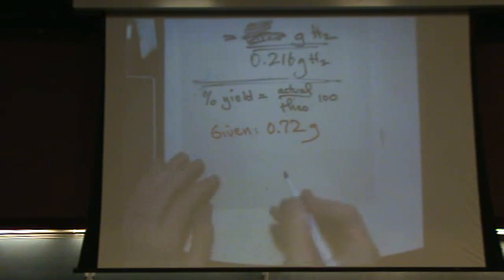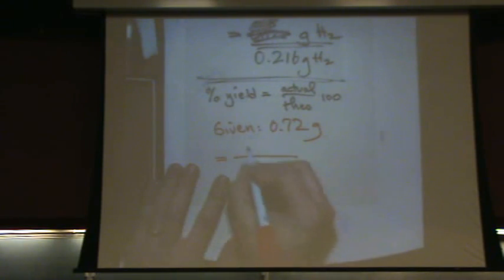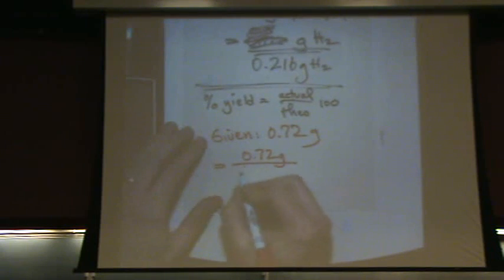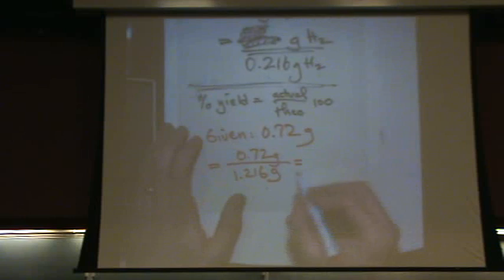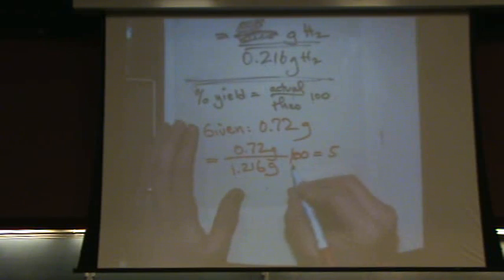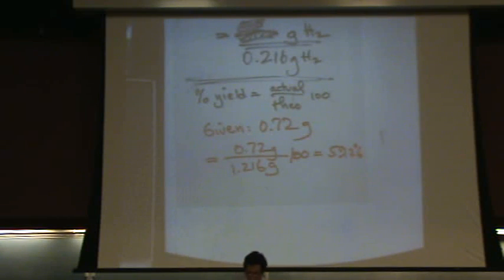So what you do is you say whatever's given on top, that's the actual, divided by what you really got theoretically, 1.216. And whatever the heck this is. We don't need to know. Okay. Got it. Did you multiply by 100? There we go. So 59.2%. You better not get a negative number and you better not get a number over 100.